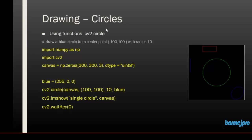Considering the example here, it's exactly the same as the previous one. We are importing the NumPy library aliased as np, then importing OpenCV, then creating a canvas of size 300x300 pixels. We declare a color called blue — in BGR format, blue is full (255) and the other two are zero. Then we draw the circle using cv2.circle. The first argument is the canvas, then the center point fixed at (100, 100), then the radius of 10, then the color blue, and we display the canvas in a cv2 window.